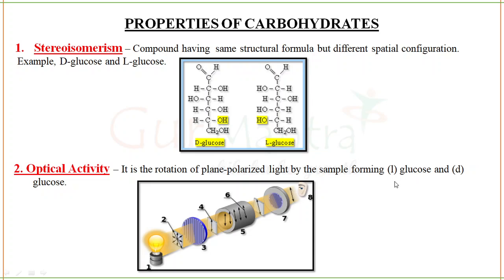If rotating to the left (anti-clockwise), we call it small l-glucose. If rotating to the right (clockwise), we call it small d-glucose. This is the difference between capital D/L and small d/l.